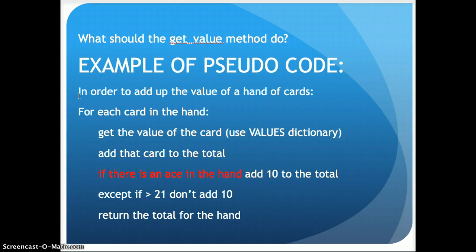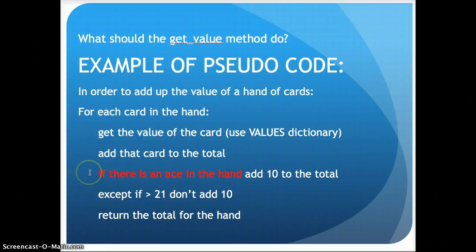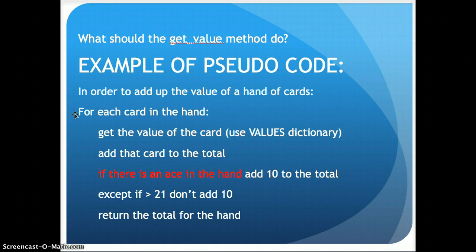We ask: what should the getValue method do? Here's the pseudocode: in order to add up the value of a hand of cards, for each card in the hand, I'm going to get the value of the card using the values dictionary and add that card to a running total. If there's an ace in the hand, then I need to add 10 to the total, except if it would go over 21 — then don't add 10. Then I return the total for the hand. This is what I want this to do.